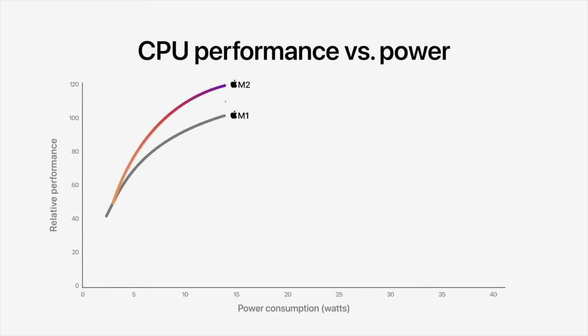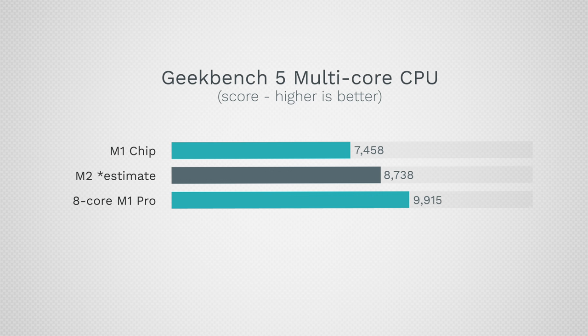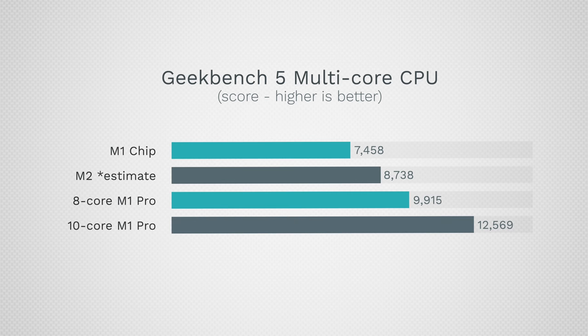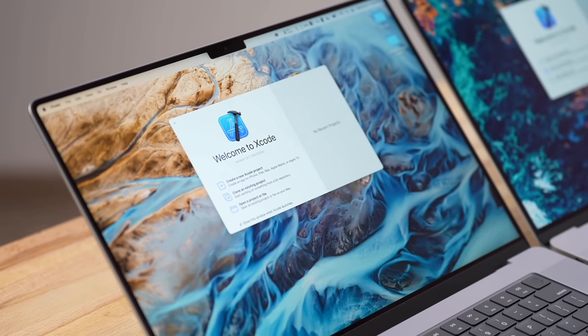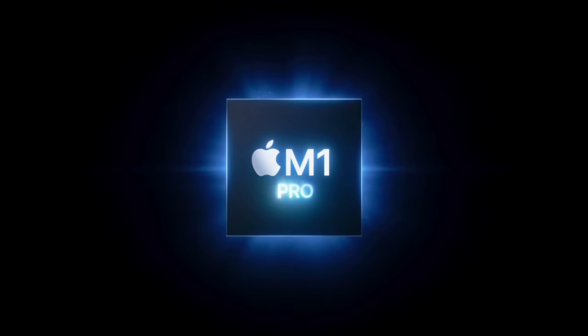Moving on to multi-core performance, adding Apple's 18% boost claim to the M1 gives us 8,738 points for the M2. As you can see, the binned 8-core M1 Pro is still 13.5% faster than the M2, and the unbinned 10-core M1 Pro is a massive 44% faster. So if you need as much multi-core CPU performance as possible for things like Xcode programming, photo editing, or music production, the M1 Pro is still the way to go — though you'll pay significantly more.